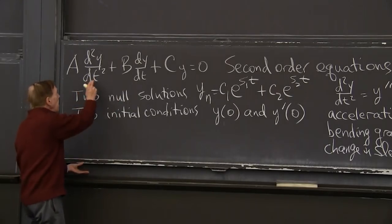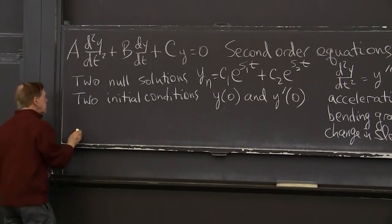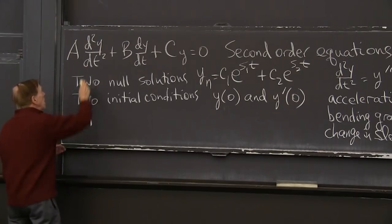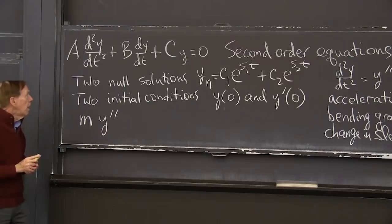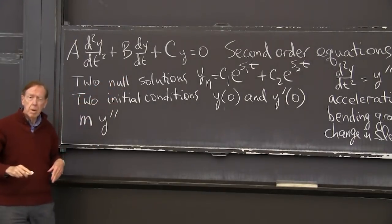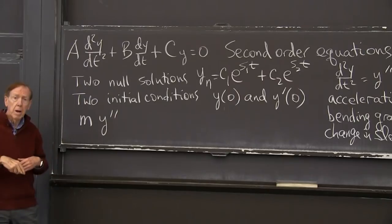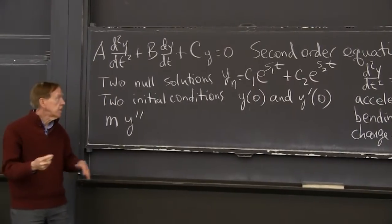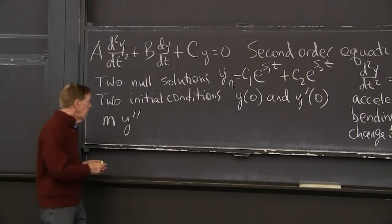So we have a, it's Newton's law, and so a will be the mass, m, times y double prime, second derivative. b is 0. Later, b will be a damping term, a friction term, a resistance term. But let's have that 0. So we're going to have perpetual motion here,